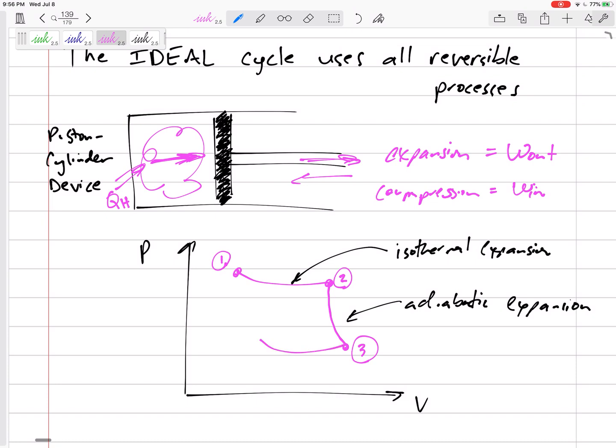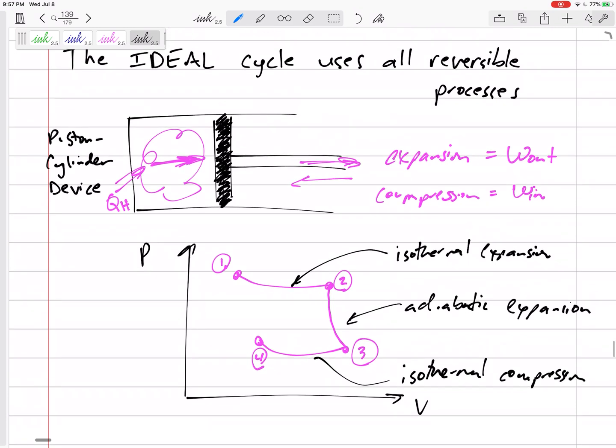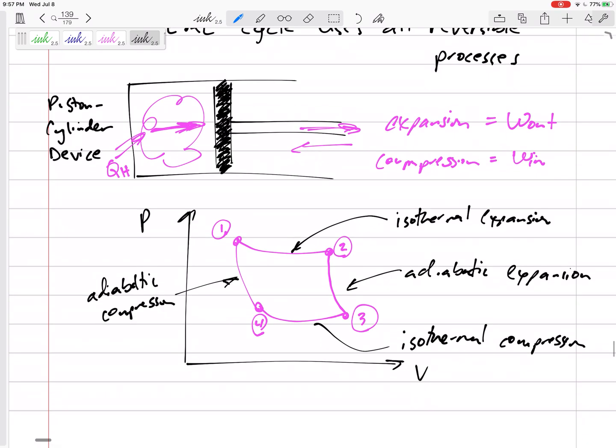So we've got to go a different route using reversible processes. We're going to go from 3 to 4. And this is going to be an isothermal compression. And then we're going to go from 4 back to 1. You probably guessed this. Adiabatic compression.